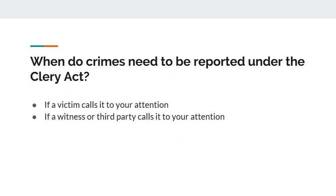Crimes are only reported if the victim directly reported to a Campus Security Authority. If the victim brings an incident to your attention and shares the concerns, document the crime and report to the designated officer. However, Campus Security Authorities should not document a crime report if the Campus Security Authority overhears it in the hallway, or a classmate mentions a crime during a class discussion or speech. Do not report if you learn of the crime in an indirect manner.